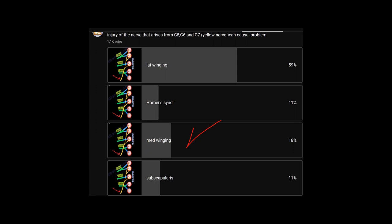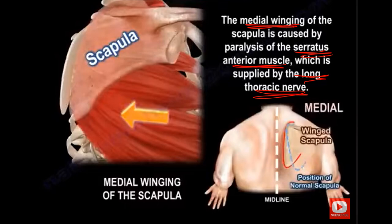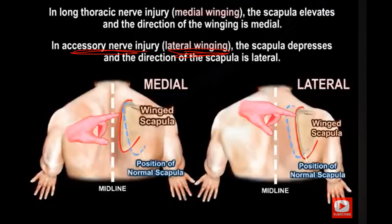From C5, C6, and C7 comes the long thoracic nerve. If this nerve is injured, it will cause medial winging of the scapula. The medial winging occurs because the serratus anterior muscle will be paralyzed, and the serratus anterior muscle is supplied by the long thoracic nerve. In long thoracic nerve injury, there will be medial winging and the scapula direction will be medial.